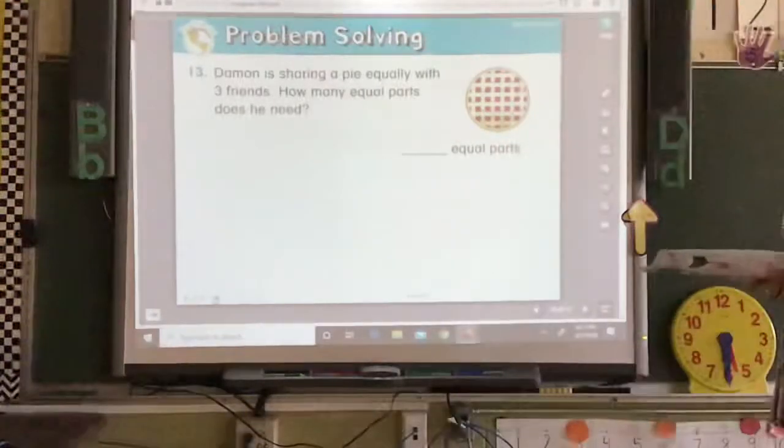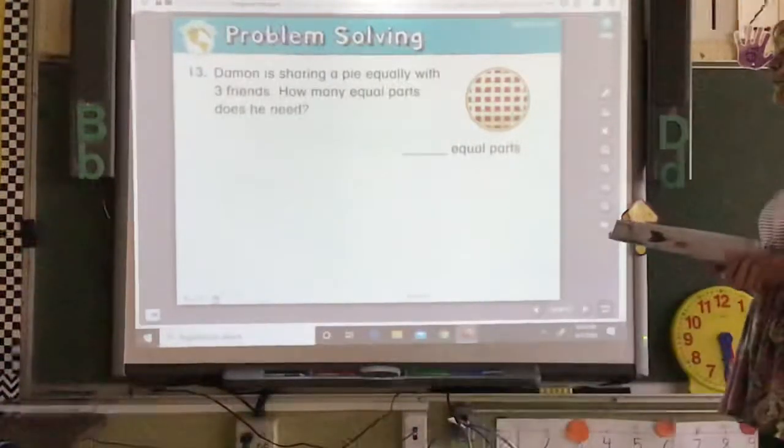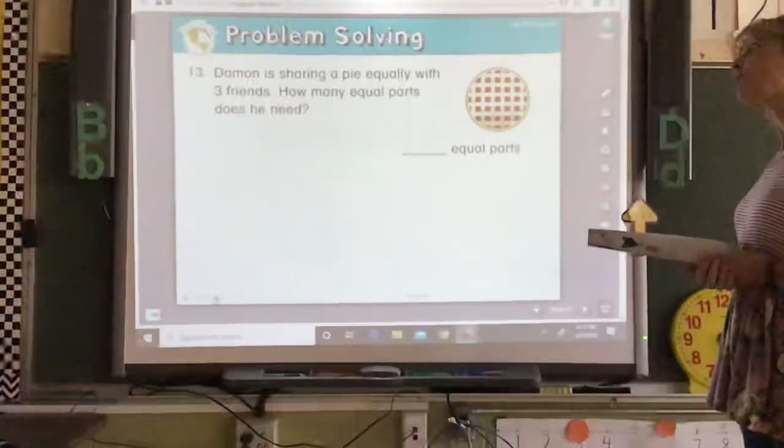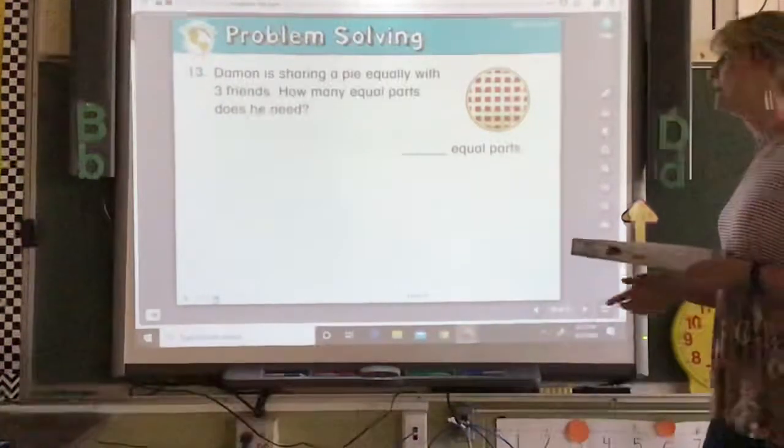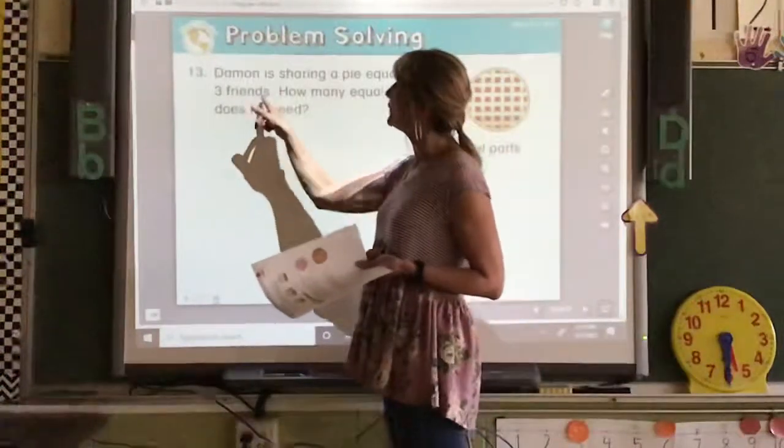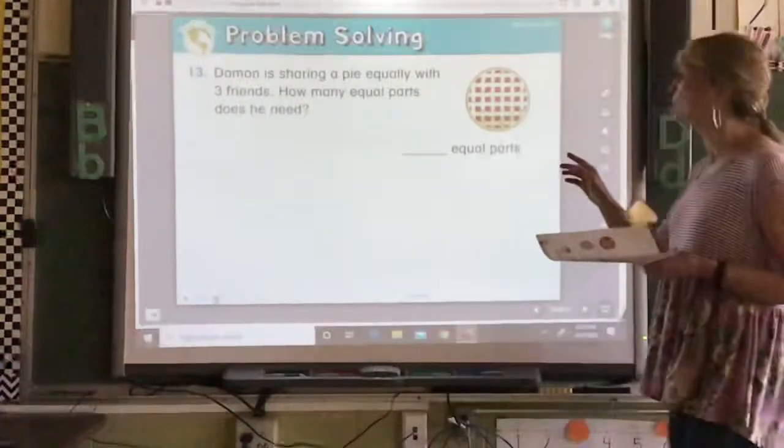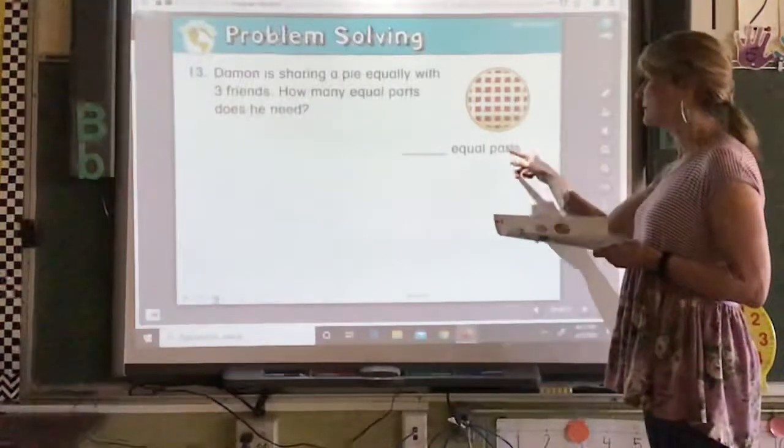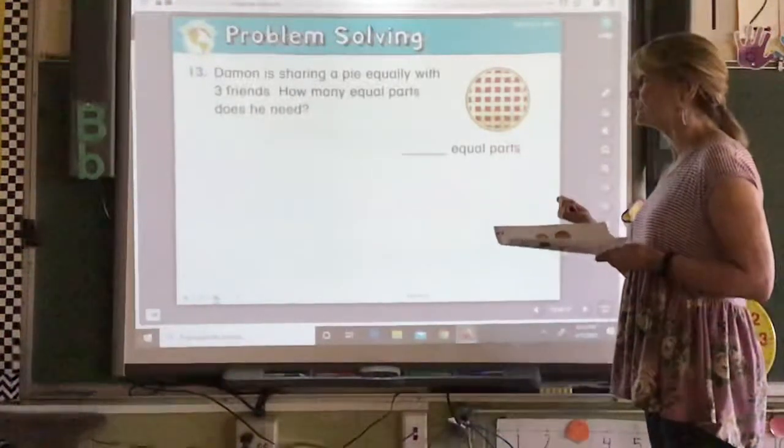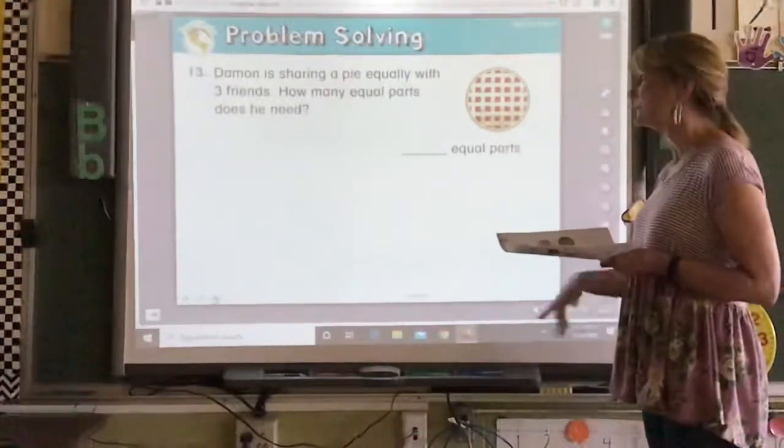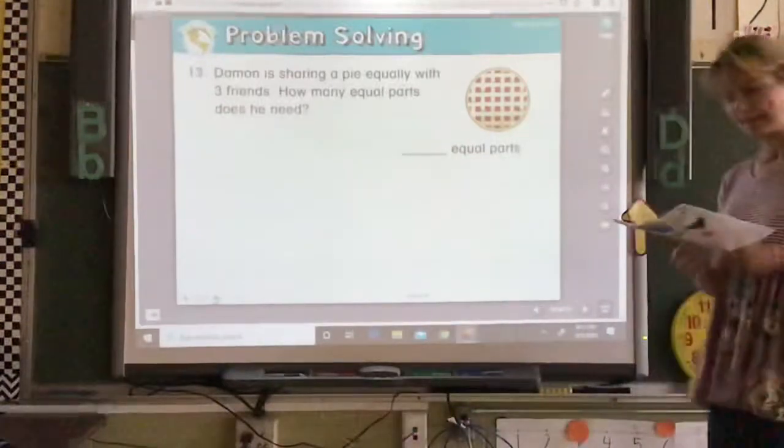Damon is sharing a pie equally with three friends. How many equal parts does he need? You're talking about three friends and Damon. So I want you to draw lines to make enough pieces for Damon and three friends and write how many equal parts it needs to be.